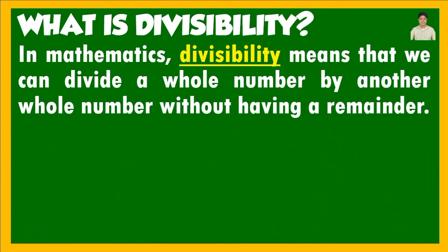In mathematics, divisibility means that we can divide a whole number by another whole number without having a remainder. To understand what 'without remainder' means: for example, if you have 20 pesos and you divide it among 2 children giving them an equal amount of money, 20 divided by 2 gives 10 pesos — each child gets 10 pesos and nothing is left over.